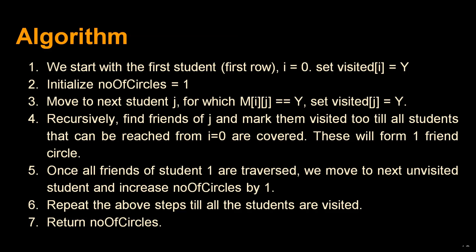Once all friends of the first student are traversed, move to the next unvisited student and increment the number of circles by 1. Repeat these steps until all students are visited, then return the number of circles.